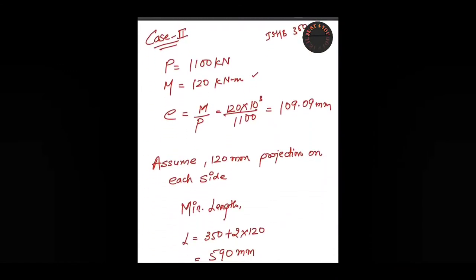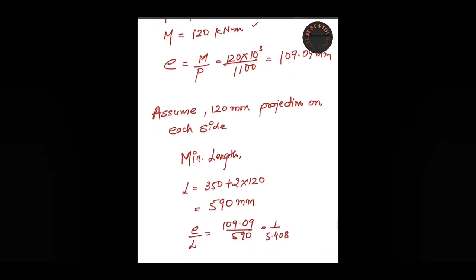In Case 2, we are taking ISB 350 with loading 1100 kN, but the moment changes to 120 kN·m. Our first step is finding the eccentricity using the formula M/P. Putting the value of moment and P = 1100 kN, we get 109.09 mm as the eccentricity.